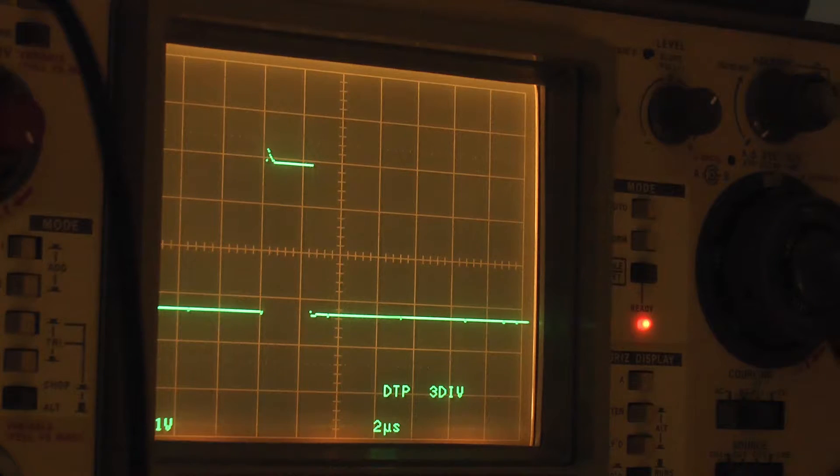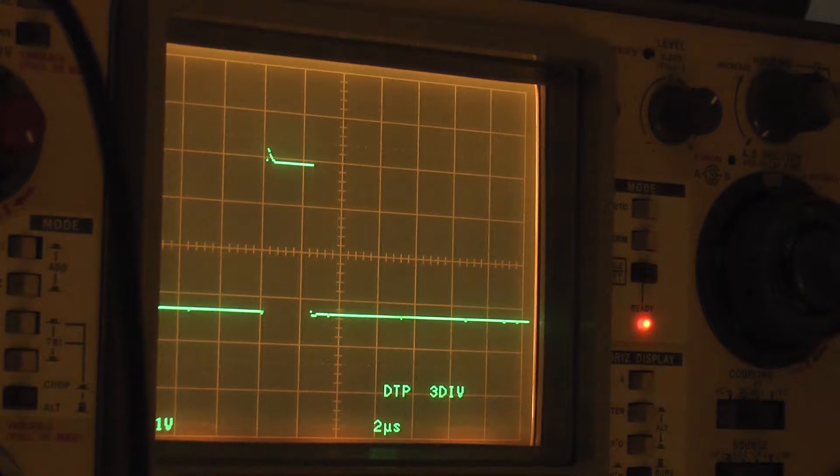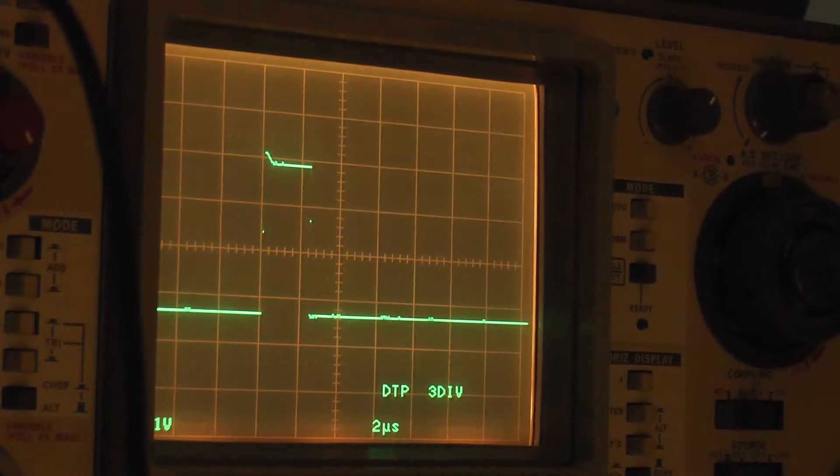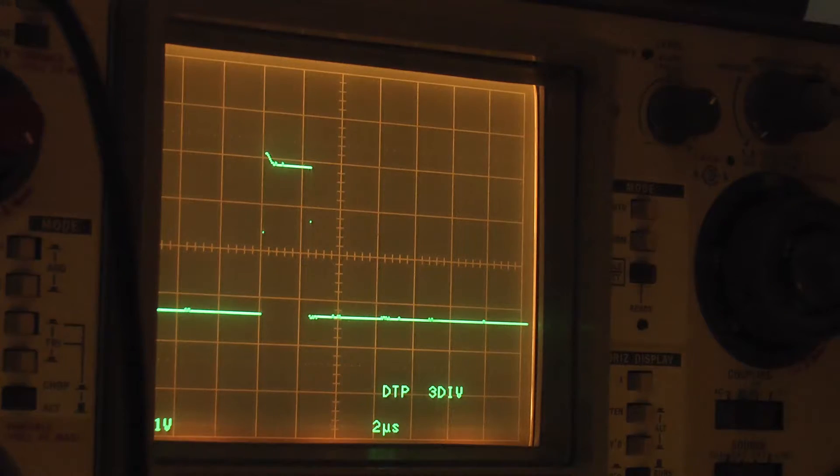As you see here, my combiscope is waiting to acquire data. And I'm now resetting the Arduino. And we see, tada, the trigger light went off and the pulse has been acquired.